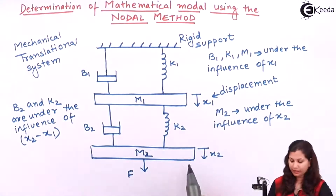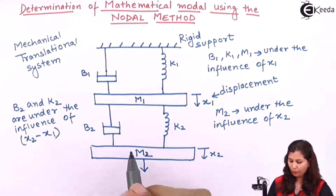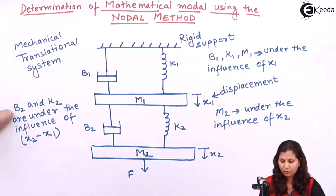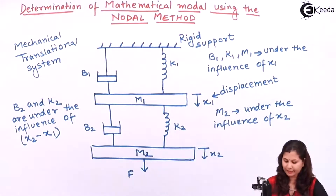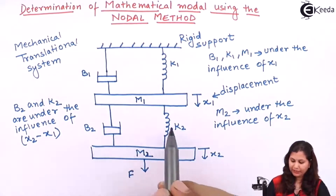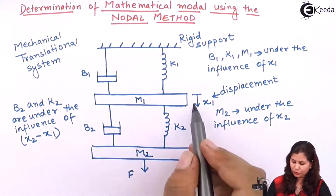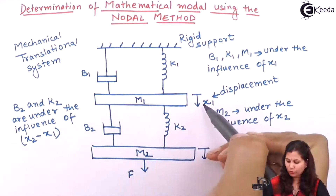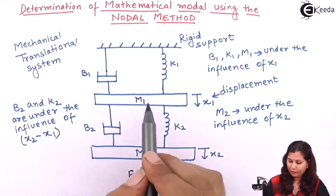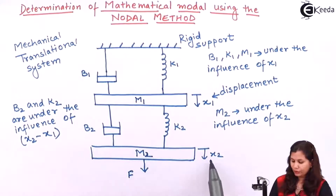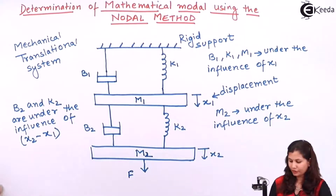Mass M2 and M1 are not under the influence of this difference, because mass is not affected by the difference of the displacements. Only the damper and the spring are affected. So B2 and K2 are under the influence of X2 minus X1, and they will be connected in parallel between nodes X1 and X2. B1 and K1 will be connected in parallel with node X1, M1 is connected between node X1 and the rigid support, and M2 is connected to node X2 and the rigid support.